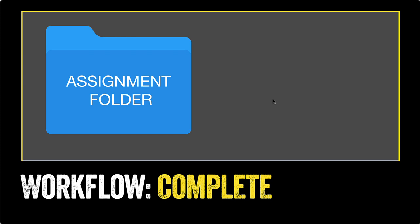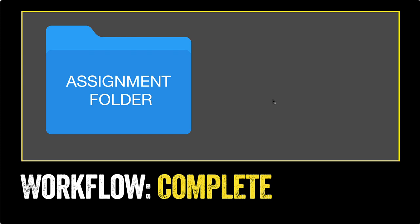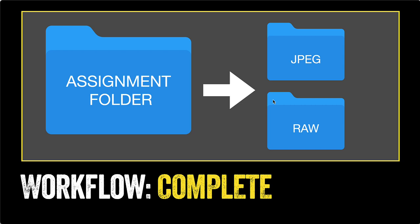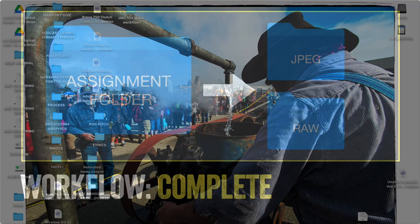What we're aiming for is to have an assignment folder that's going to contain two subfolders: completed and processed JPEG images, and also the Camera Raw files that are the raw images that came out of the camera. I've already inserted my SD card, and now I want to get the images off of it.